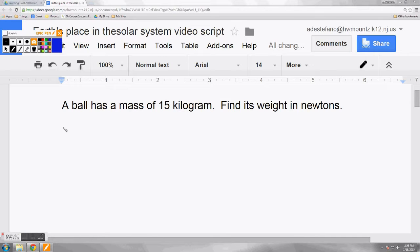So now we'll show you how to calculate mass, weight, and gravity on different planets. In this first problem, a ball has a mass of 15 kilograms, and we're looking for its weight in newtons. I always start out by writing the formula before I begin. Weight equals mass times gravity.